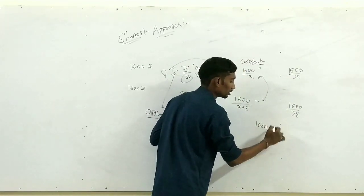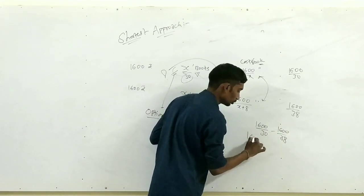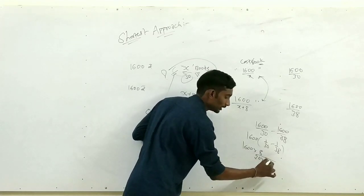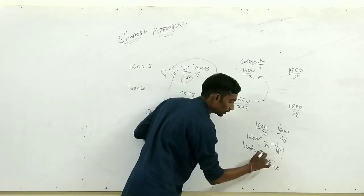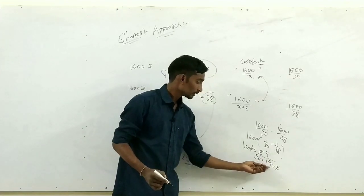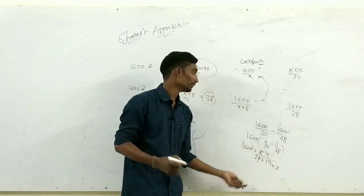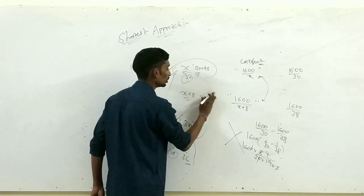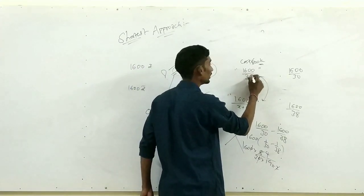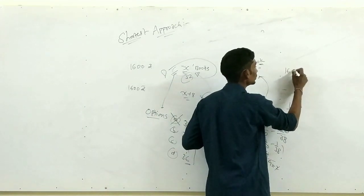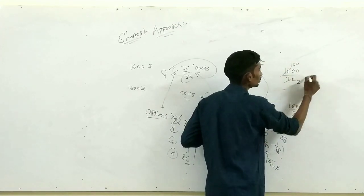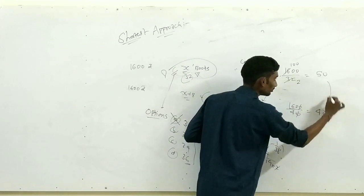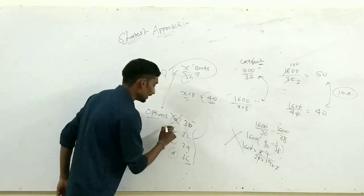1600/30 − 1600/38 = 1600 × (1/30 − 1/38) = 1600 × 8/(30×38)। 30×38 = 1140, और 1600×8/1140 completely divisible नहीं है, 10 नहीं आता। तो Option A नहीं। अब x=32: 1600/32 = 50, और 1600/40 = 40। Difference = 50 − 40 = 10 ✓। Answer है Option B: 32।